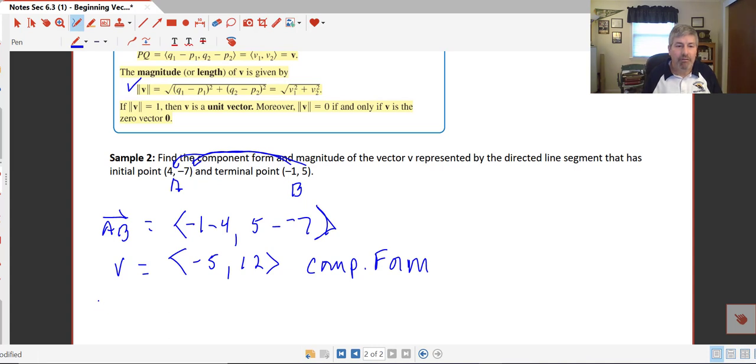And then to find the magnitude of V, so that's what that double brackets are again, the magnitude of V, is simply using our distance formula. Now we've got our component form, so we've already done our subtraction, our change in our X's, negative 1 to 4, negative 5 squared, plus, and our change in our Y coordinates is 12. So really I can steal that from my component form.